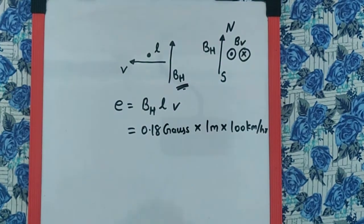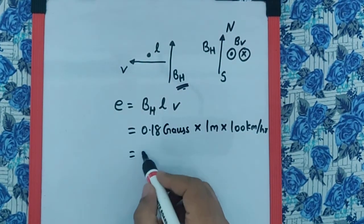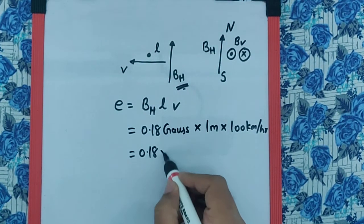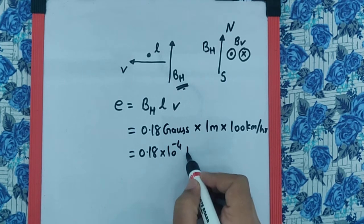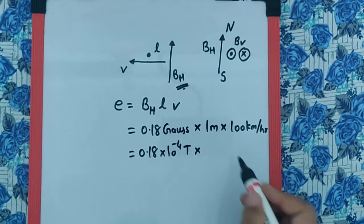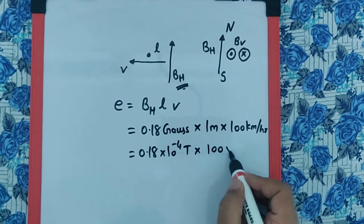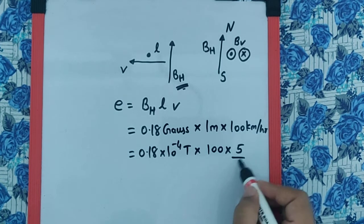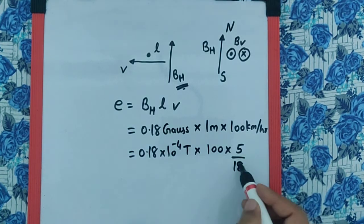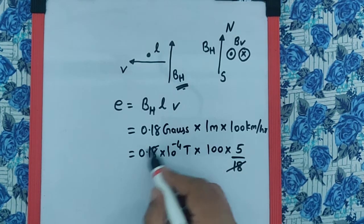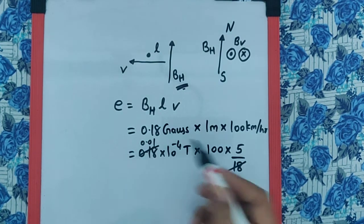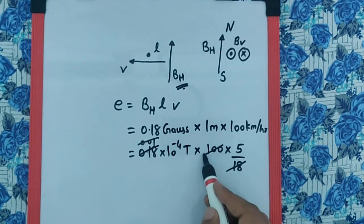So now if we convert the values in the SI units, we get 0.18 times 10 raised to minus 4 tesla. One meter does not make any difference. The 100 kilometers can be converted as meters per second by multiplying by 5 by 18.